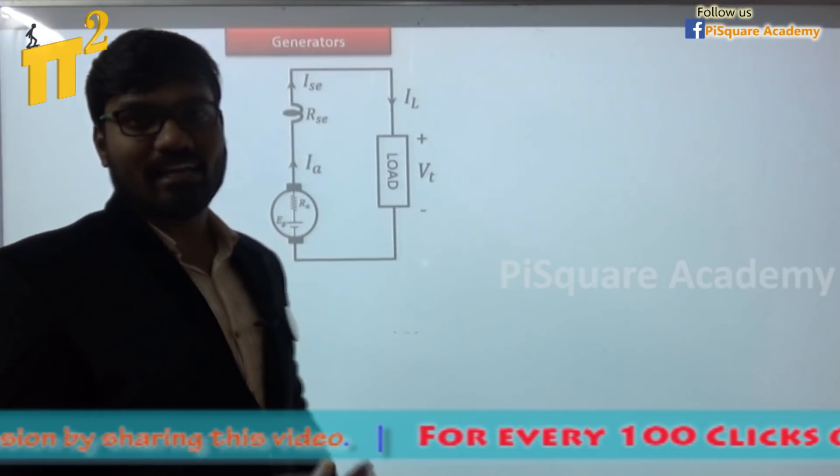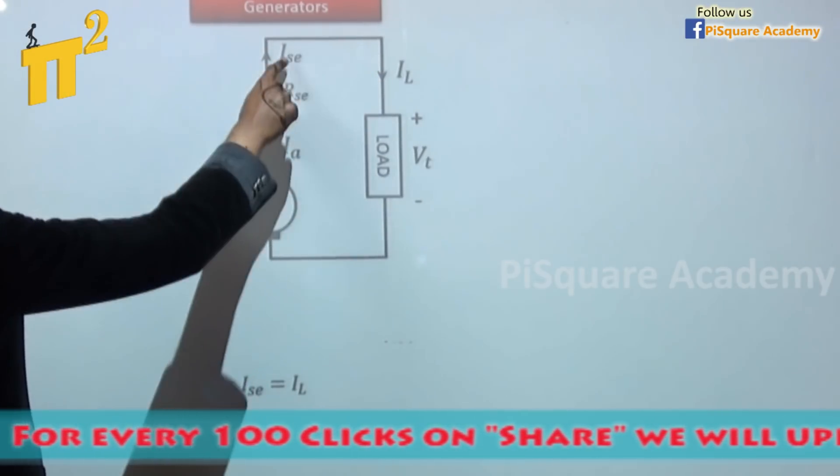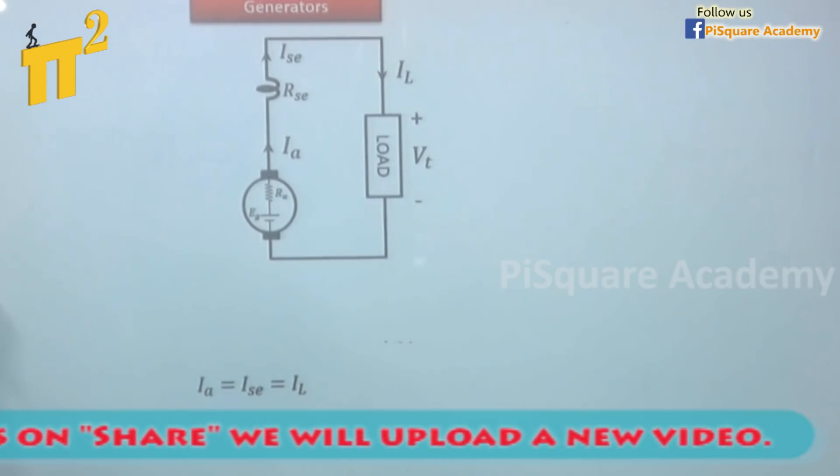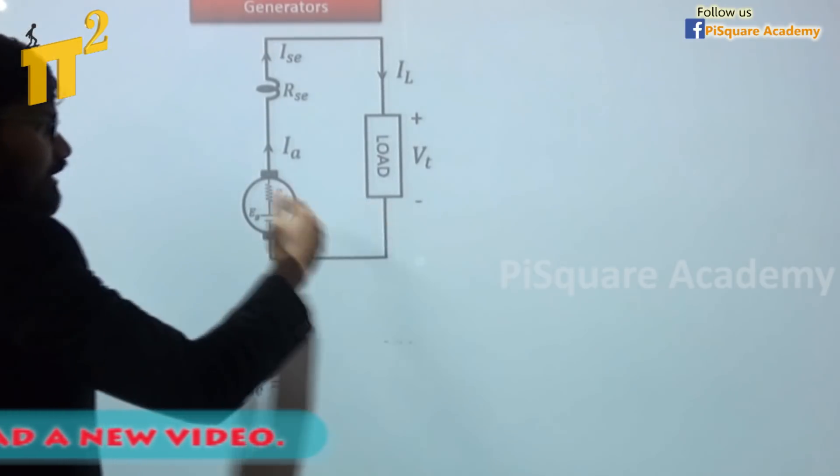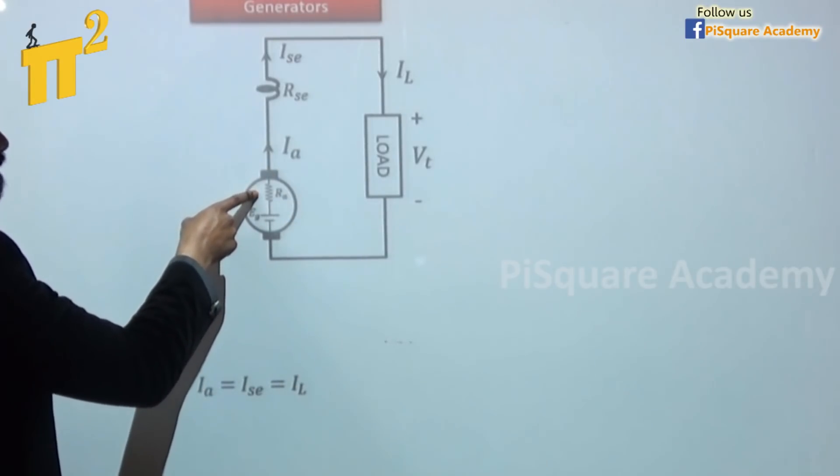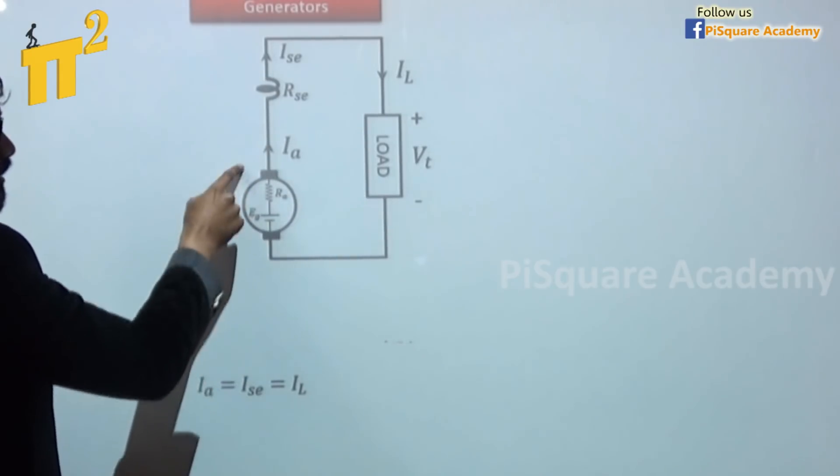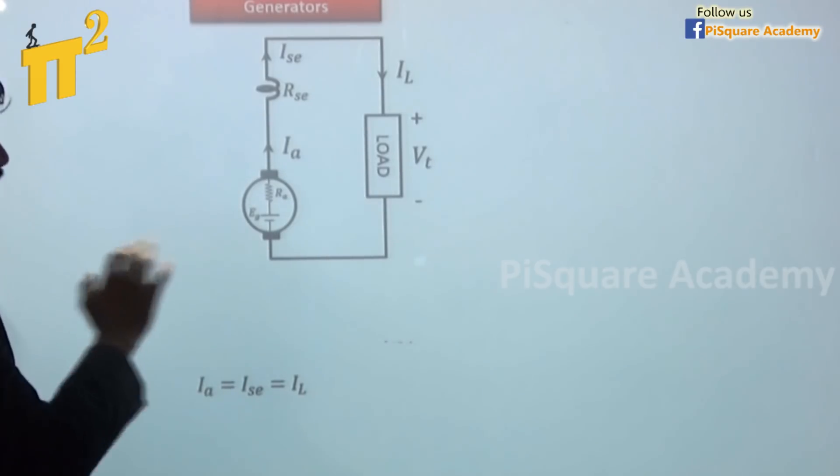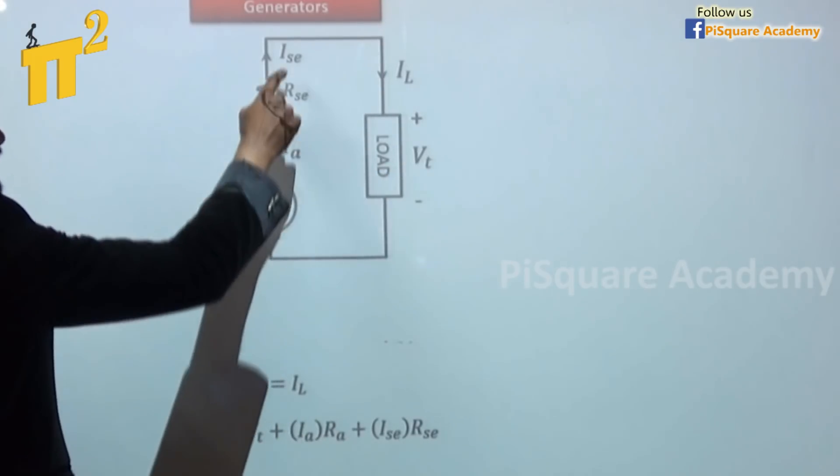Corresponding voltage and current equation - all these currents are same. Ia, Isc, Il, they are in series simply. So these are equal. Next, Eg is equal to whatever voltage is induced here, that will appear across the load after drops. What are the drops? Resistance drop across the armature winding, resistance drop in the series field winding, and brush contact drop. So I can say, for the time being, let's not include brush contact drop. I am saying Eg is equal to Vt plus Ia*Ra plus Ia*Rsc.